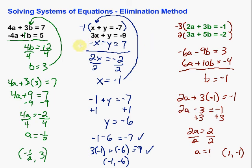So the elimination method allows us to get rid of one of the two variables in a system and then solve for it. Once we've found that first variable, we can put it back in to solve for the other variable. Our solutions will be in the form of ordered pairs. Hope this was helpful!